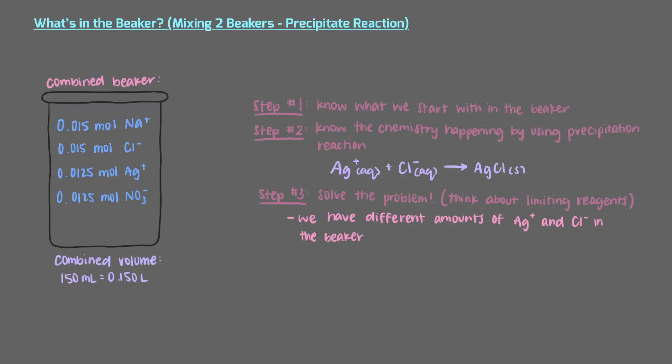We see that there are different amounts of silver ions and chloride ions in our solution, which means that one of these ions is the limiting reagent. One of them is going to run out first during the reaction. Which one is it?